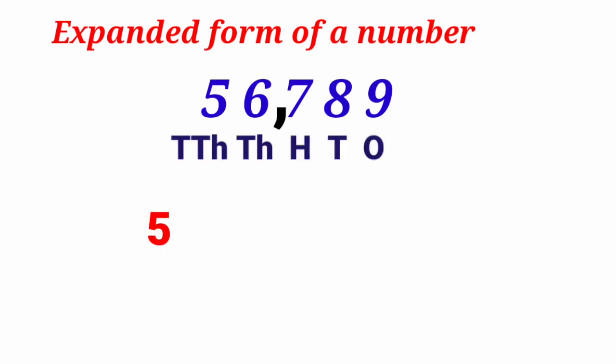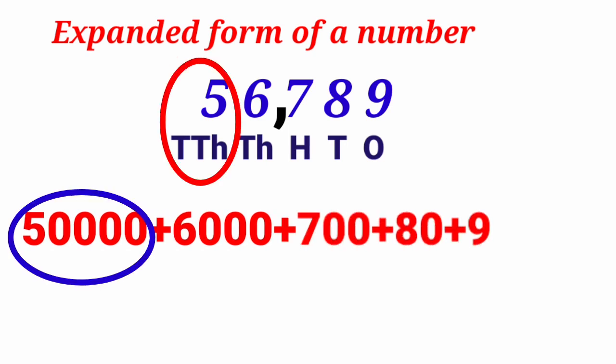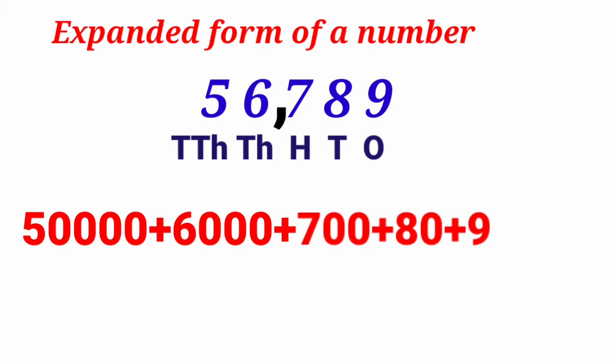Now how to write it in expanded form? First let's see the place value of five. It is at ten thousand place. So place value of this five is fifty thousand. Next digit it is six. Six it is at thousands place. So we will add six thousand.